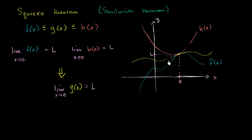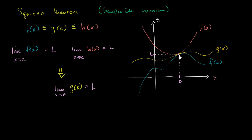This is common sense: f of x is approaching L, h of x is approaching L, and g of x is sandwiched in between, so it also has to approach L. You might ask — why is this useful? As you'll see, this is useful for finding limits of some wacky functions. If you can find a function that's always greater than it and one that's always less than it, and both approach the same limit at some value c, then you know that the wacky function in between is going to approach that same limit.